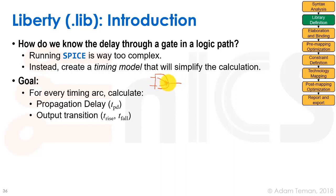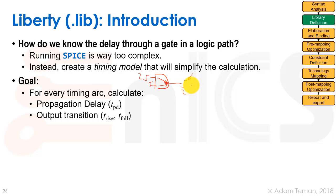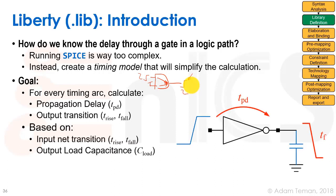Our goal is to take every timing arc — an arc is any path between an input and output. For every timing arc, we calculate two things: the propagation delay and the rise or fall time of the output transition. A timing arc also captures the direction: a rising transition at the input produces a rising transition at the output. Our model is based on two factors: the rise or fall time at the input to the gate, and the load at the output of the gate.